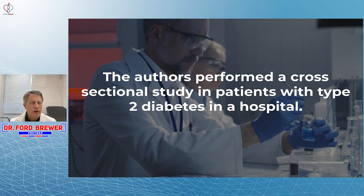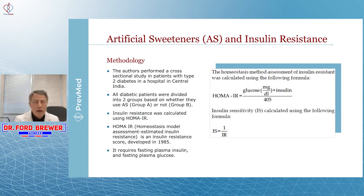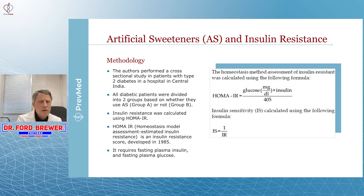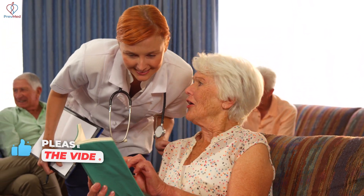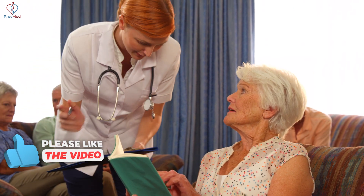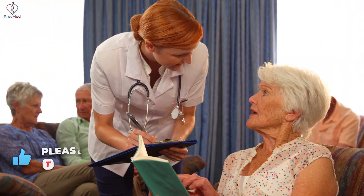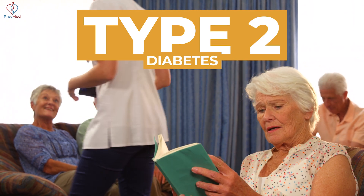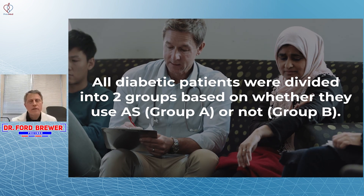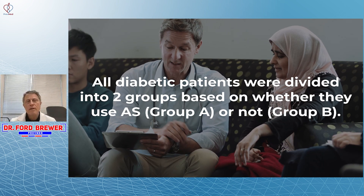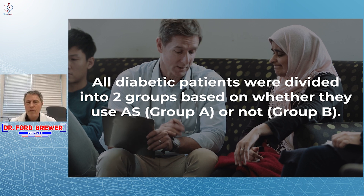It's not a randomized clinical trial. You're not taking a group, breaking it into two or more groups, randomizing to a study group and a placebo group — there's none of that. This is again just a cross-sectional study. You take a bunch of patients, you do a measurement on them, and you ask them if they were using artificial sweeteners. These were patients that already had type 2 diabetes, seen at a hospital in central India. All the diabetic patients were divided into two groups based on whether they used artificial sweeteners — group A or group B.